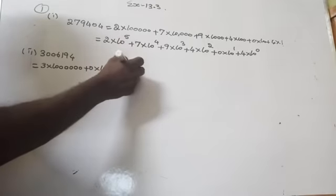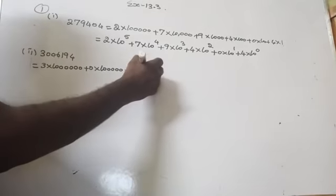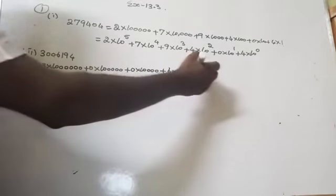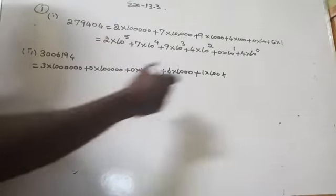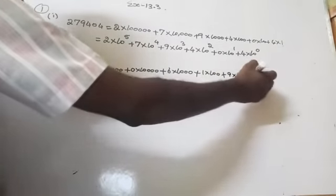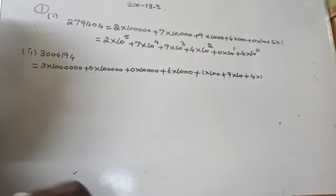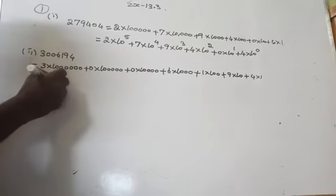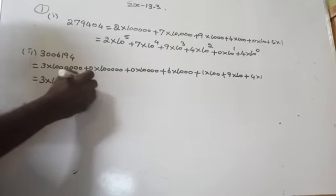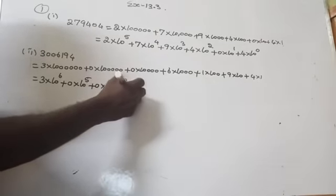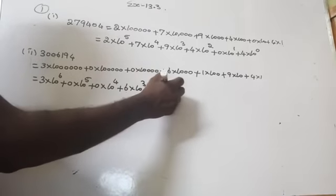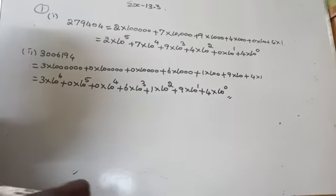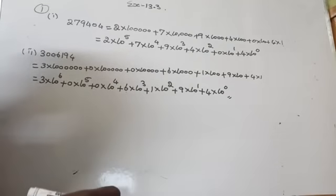Now write into the form of exponent: 3 into 10 to the power of 6, plus 0 into 10 to the power of 5, plus 0 into 10 to the power of 4, plus 6 into 10 to the power of 3, plus 1 into 10 to the power of 2, plus 9 into 10 to the power of 1, plus 4 into 10 to the power of 0.